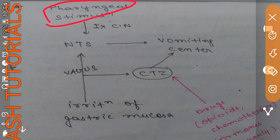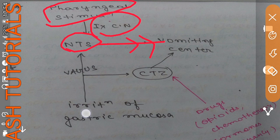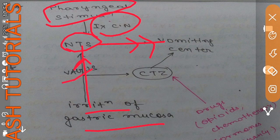Pharyngeal stimulation — any repeated pharyngeal stimulation passes its stimulus through the ninth cranial nerve to the NTS, and the NTS then passes the signal to the vomiting center. Irritation of the gastric mucosa also passes a stimulus to the NTS through the vagus nerve.